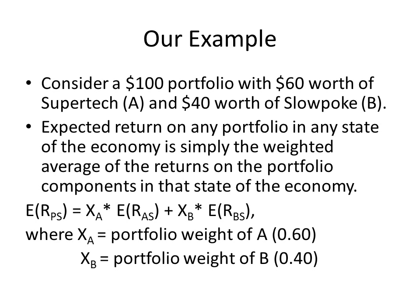Getting back to our example, we have $60 worth of SuperTech and $40 worth of SlowPoke, giving us a $100 portfolio. So the weights are .6 for SuperTech and .4 for SlowPoke. We can find the expected return on any portfolio in any state of the economy by finding the weighted average of the returns on the portfolio components in that state. For example, the expected return of the portfolio in depression equals the weight on A times the expected return on A in depression, plus the weight on B times the expected return on B in depression.